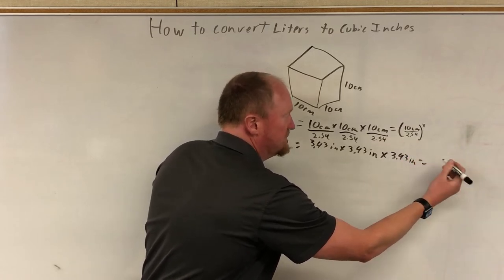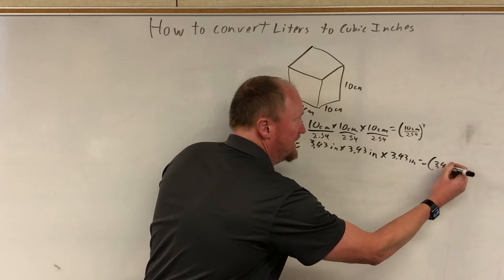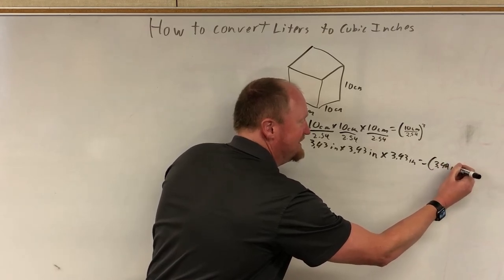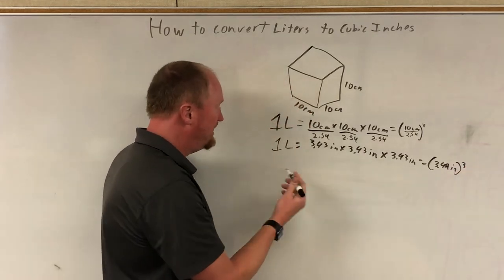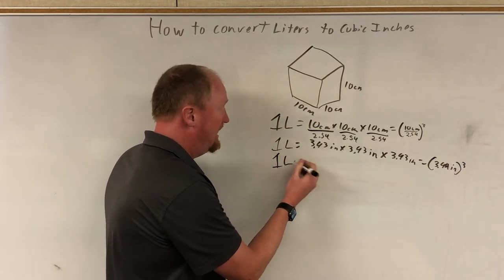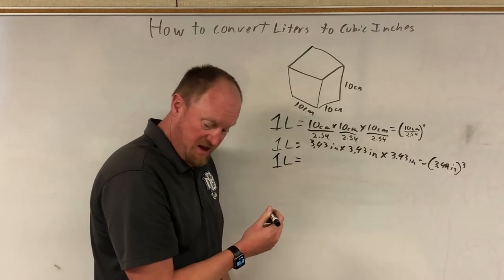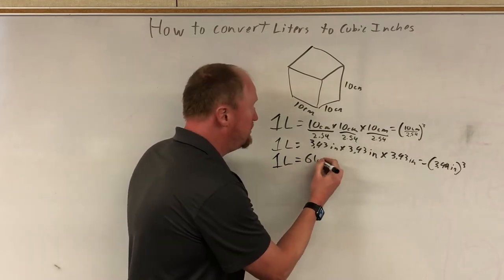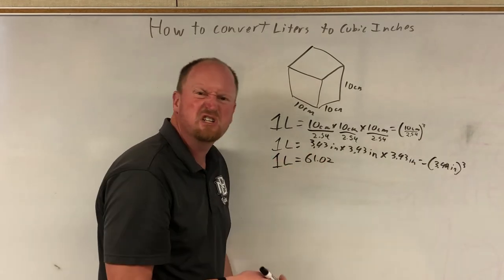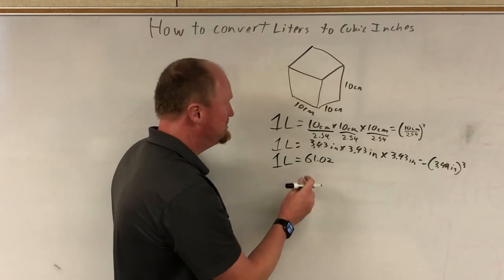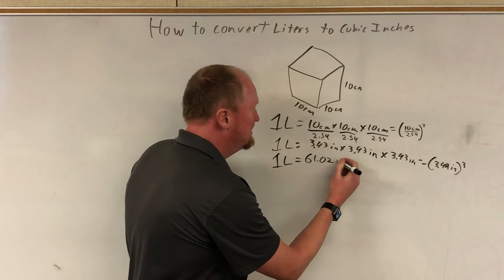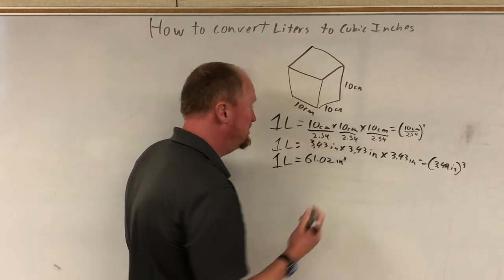And that is equal to 3.94 inches, and the whole thing cubed. So multiply it together all together and you get that 1 liter is equal to 61.02. You could just say 61. Come on. That's 98% accurate. But 61 inches cubed.